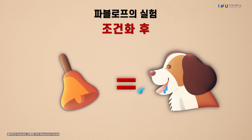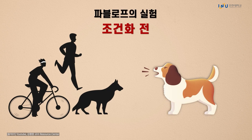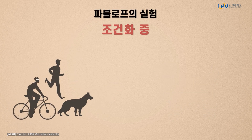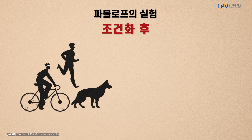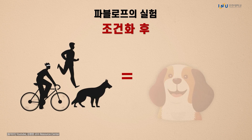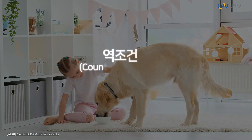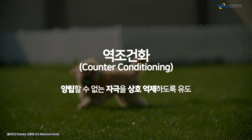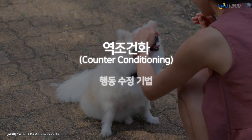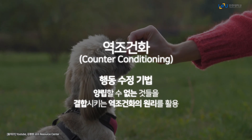파블로프 개 실험에 역조건화를 적용하면 어떻게 될까요? 음식을 보면 침을 흘리는 개가 낯선 사람들을 보고 으르렁거리는 부정적인 반응을 보인다면 낯선 사람과 음식을 결합하는 훈련을 하게 합니다. 그렇게 되면 낯선 사람을 볼 때 음식을 볼 때와 같은 행복감을 느끼면서 더 이상 으르렁거리지 않는 거죠. 이처럼 서로 양립할 수 없는 자극을 상호 억제하도록 유도하는 것이 역조건화입니다. 실제 교육현장에서 사용하는 행동수정기법은 양립할 수 없는 것들을 결합시키는 역조건화를 많이 활용하고 있습니다.